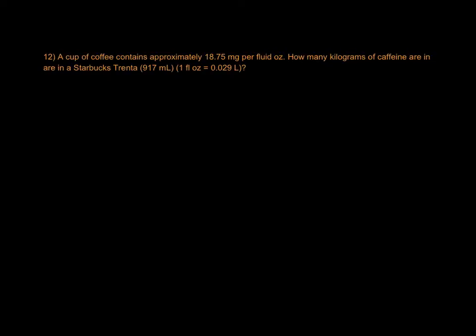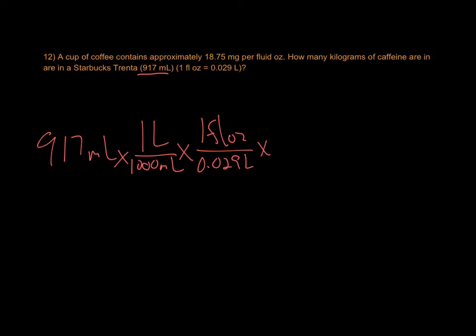Trying to measure the amount of caffeine in a very large cup of coffee. I chose to start with the amount of coffee in the drink that we're measuring, so 917 milliliters. Convert milliliters to liters, 1,000 milliliters is 1 liter. And then how many fluid ounces that is, 1 fluid ounce is 0.029 liters. And there's 18.75 milligrams of caffeine in 1 fluid ounce.